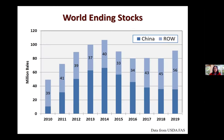Now let's take a look at global cotton ending stocks. World ending stocks are projected at the third highest level for the past decade, currently at 91 million bales. Stocks outside of China are projected at the highest level for the past decade at 56 million bales. Stocks inside China are held in governmental reserves, which prevent that cotton from trading in the market. However, stocks outside of China are traded in the marketplace, and this increase in ending stocks outside China creates further downward pressure on global cotton prices.